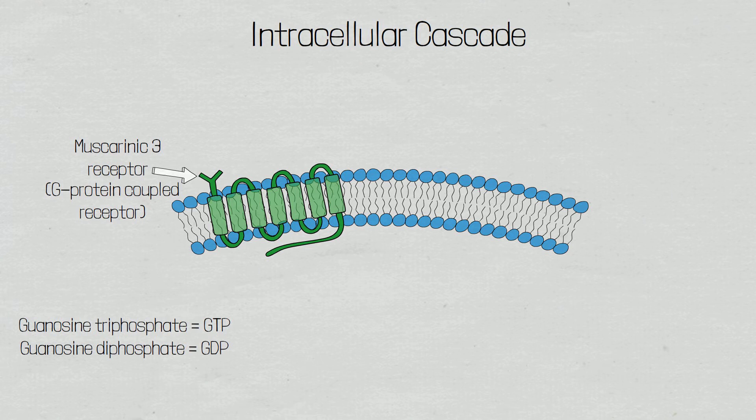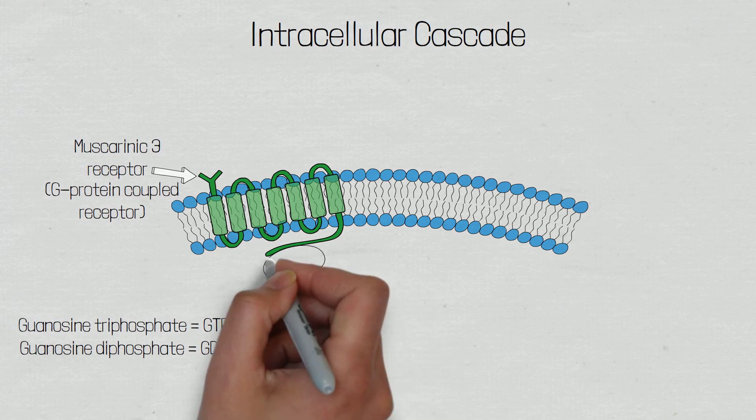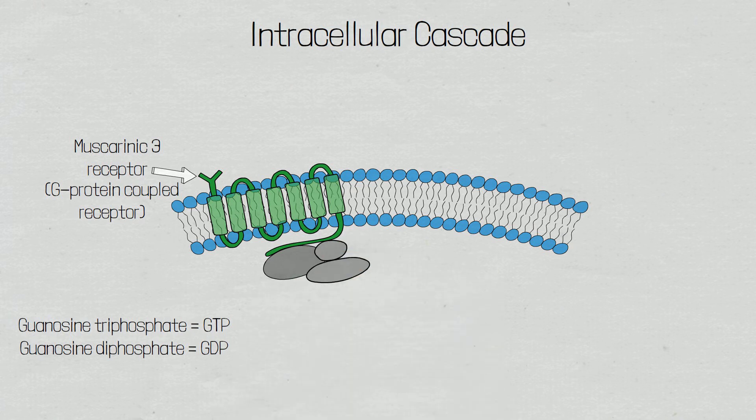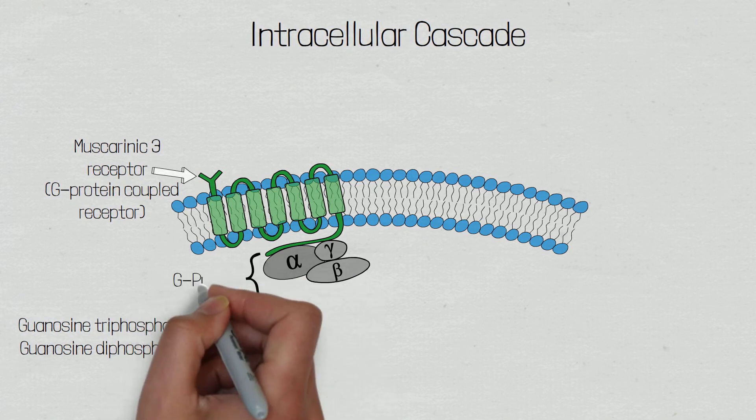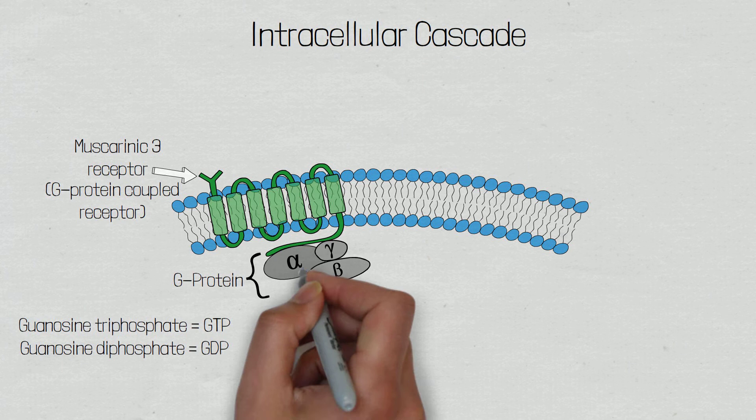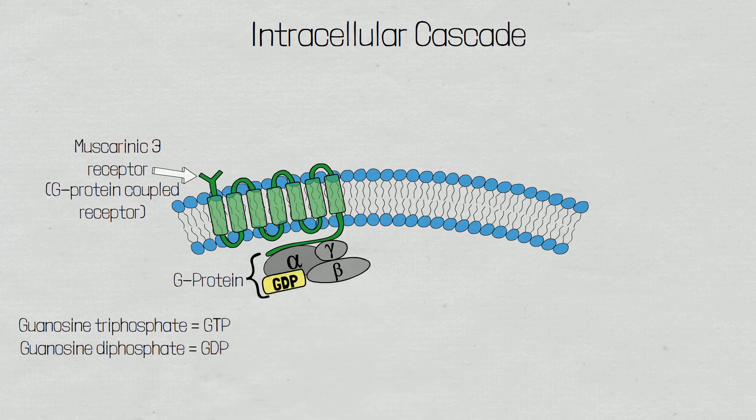In the inactive form, these G-proteins are bound to guanosine diphosphate. G-proteins consist of 3 subunits labeled alpha, beta, and gamma, which are just the first 3 letters of the Greek alphabet, and guanosine diphosphate is bound to the alpha subunit.